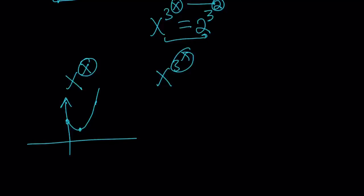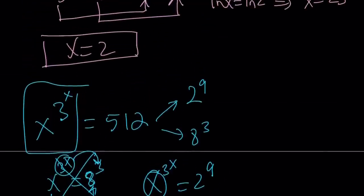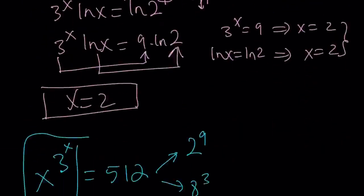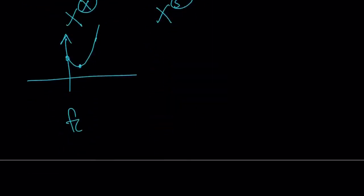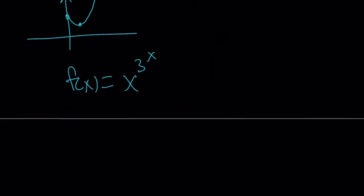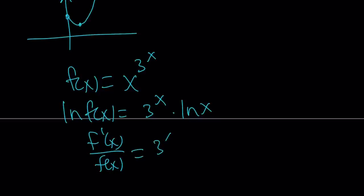But let's go ahead and take a look at the derivative of this function to get a better idea. So, we have, let's say, f of x equals x to the power 3 to the power x. I'm going to ln both sides, like before. That's going to give me 3 to the x times ln x.